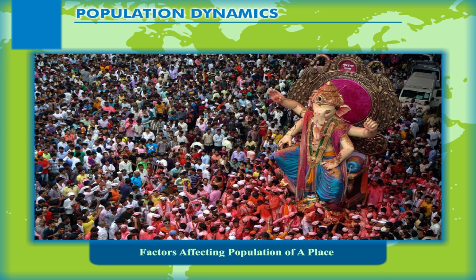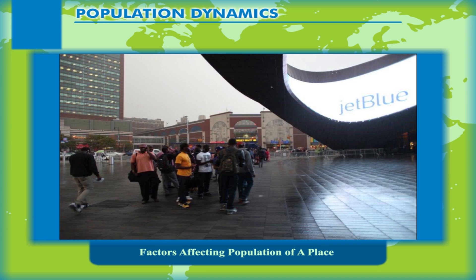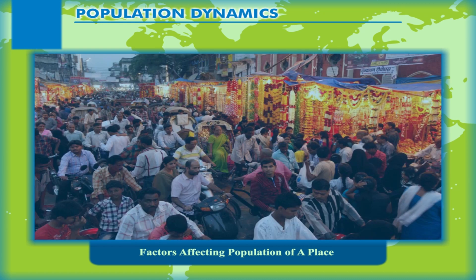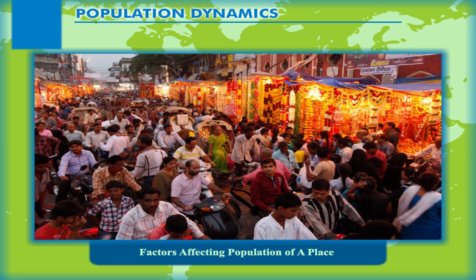Factors Affecting Population of a Place. It is an established fact that the population of any area or country of the world is not constant and changes with time. There are several reasons for this change. The most important of these is the natural increase or natural decline of population of a given area. As conditions become favourable for humans to settle, more and more children were born and this led to growth of population.